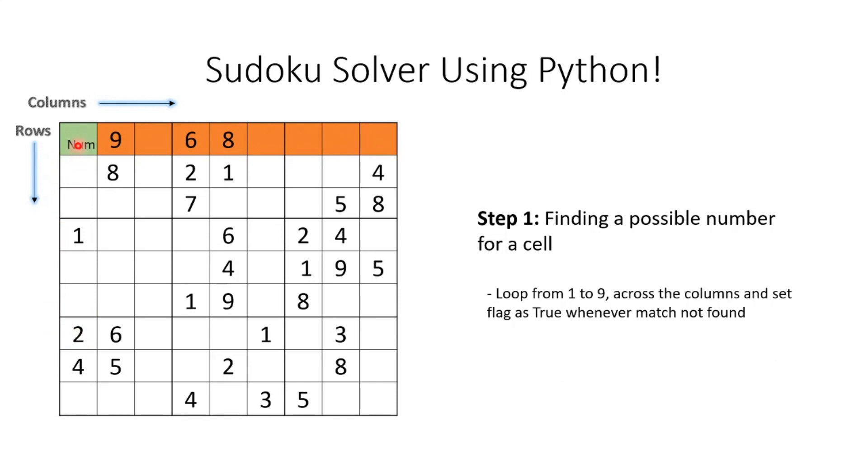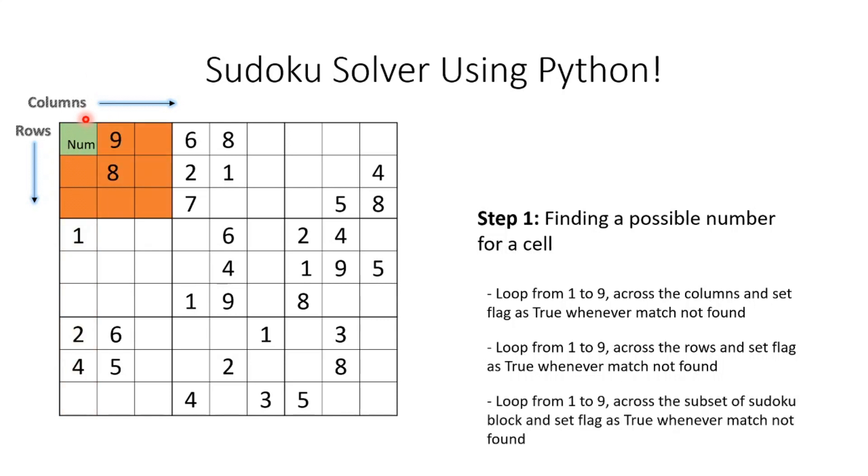I compare 2 across the columns, don't find it, then go to the rows and find a 2, so 2 becomes negative and I return back. Then I increase my number to 3, see it across columns, don't find it, go across rows, don't find it, then see the subset of rows and don't find a 3.